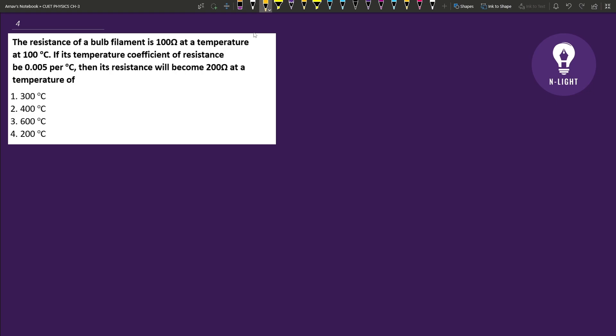The resistance of a bulb filament is 100 ohms at a temperature of 100 degrees Celsius. If the temperature coefficient is 0.05 per degree Celsius, then its resistance will become 200 ohms at what temperature?